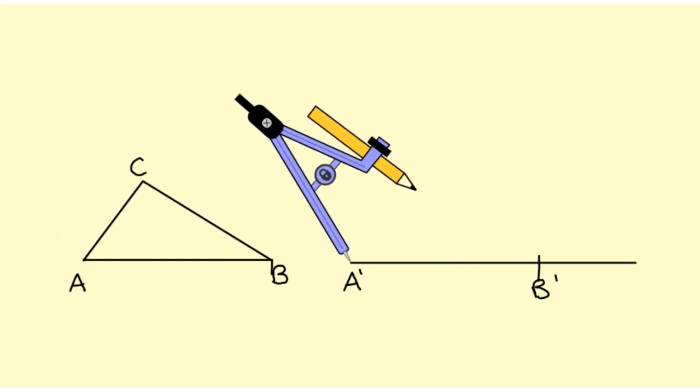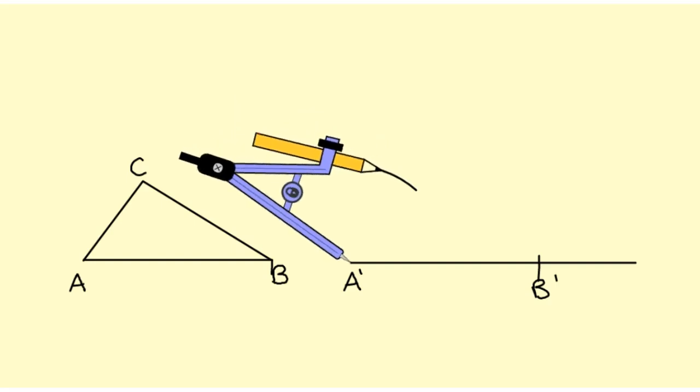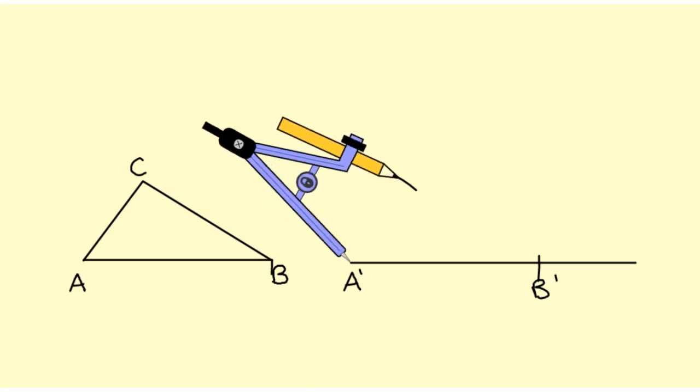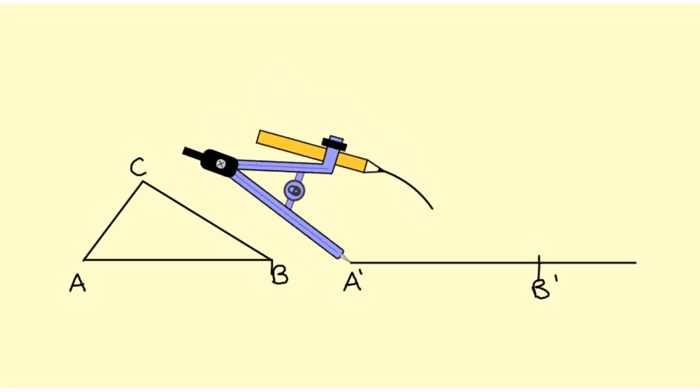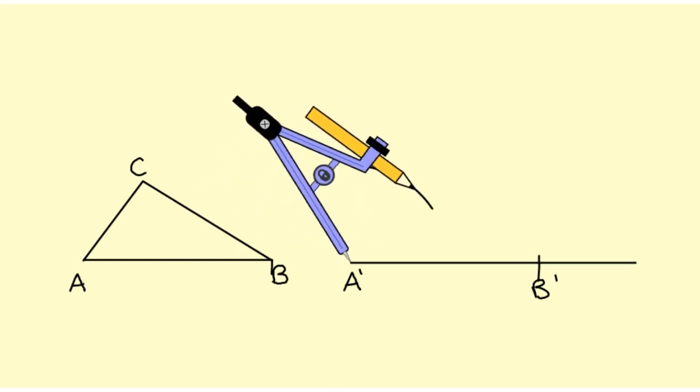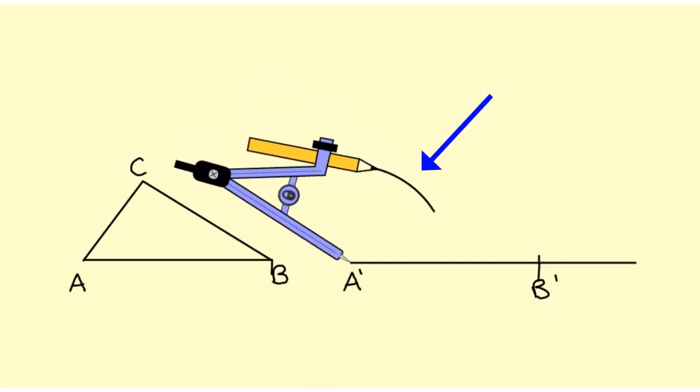I move the compass over to A', and since the length of AC is locked into my compass, that side of the triangle has to end somewhere along this arc.